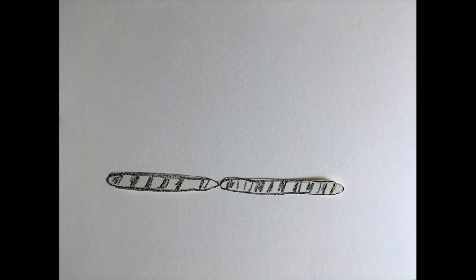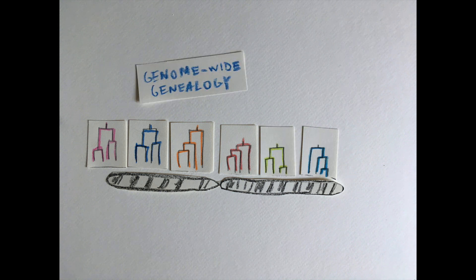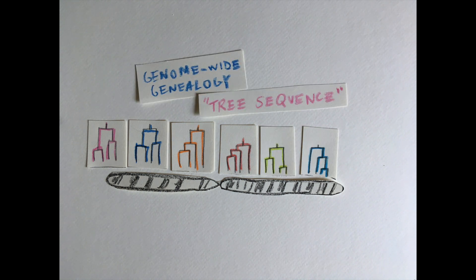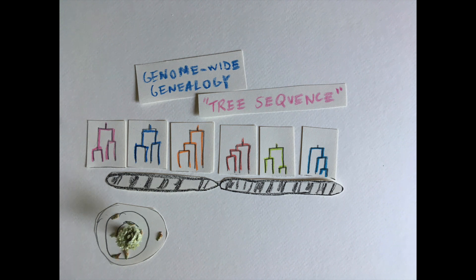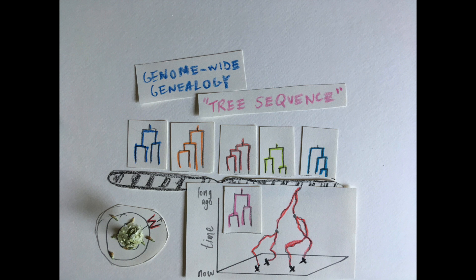Here, we take advantage of the recent ability to infer, from genomic data, a sequence of trees along recombining chromosomes, what we call a genome-wide genealogy, a tree sequence. We use this tree sequence to estimate individual-level dispersal rates, as well as the location of genetic ancestors at any locus.